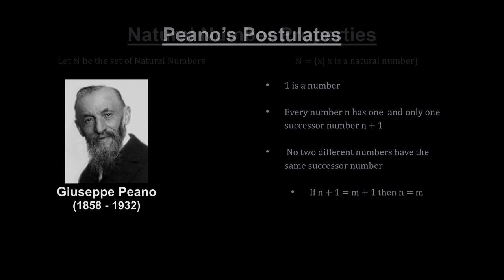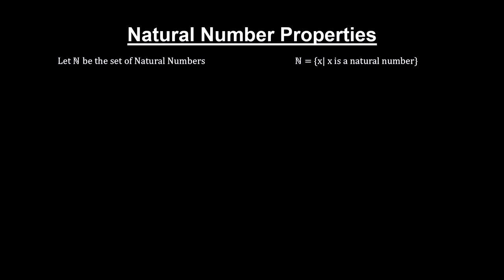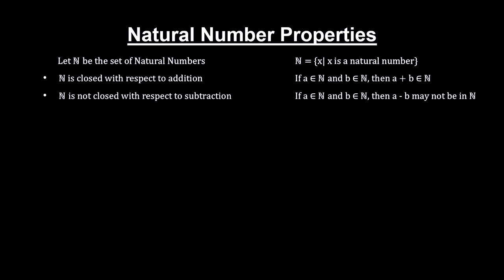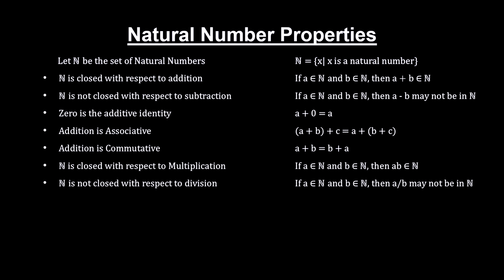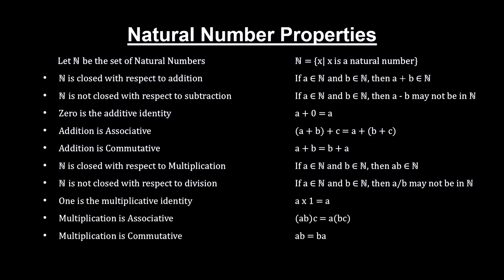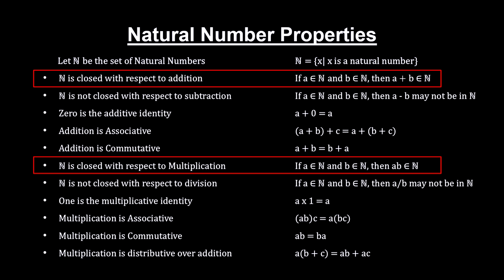From these postulates, and our basic operator definitions, a number of properties exist that we can use to manipulate numbers and solve equations. Here are the properties for the natural or counting numbers. Although we tend to take them for granted, mathematicians have to prove each and every one. You'll find a proof that A plus B equals B plus A for natural numbers in the appendix. Natural numbers are closed for addition and multiplication. By closed, we mean that these operations on numbers in the set produce numbers that are also in the set.